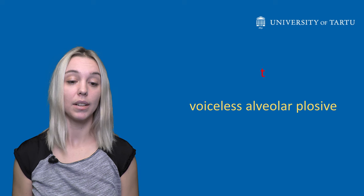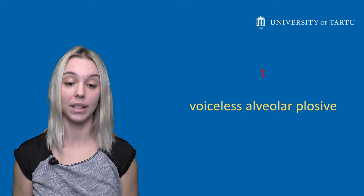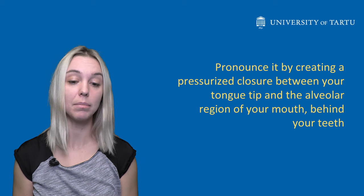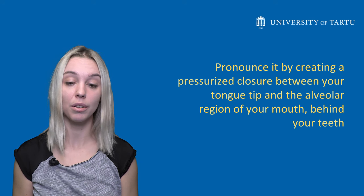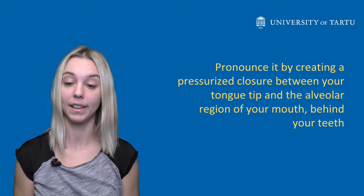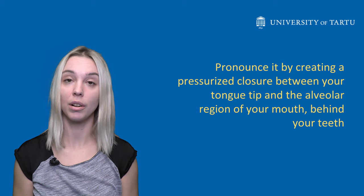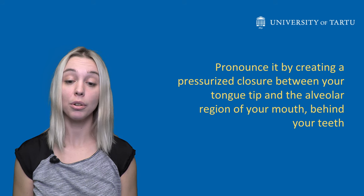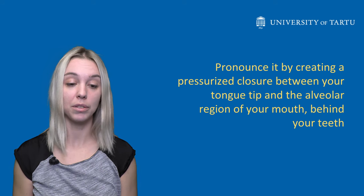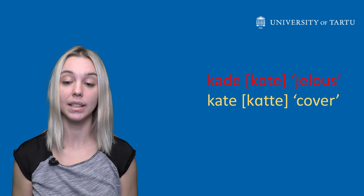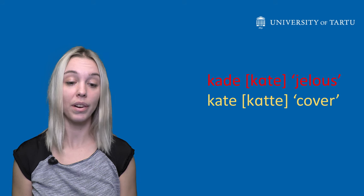T is a voiceless alveolar plosive that you pronounce by creating a pressurized closure between your tongue tip and the alveolar region of your mouth behind your teeth. Your vocal cords do not vibrate while pronouncing t. In orthography, we differentiate between voiceless t and voiced t, but they are actually both voiceless. For example, the t in kate sounds very similar to the t in kate.